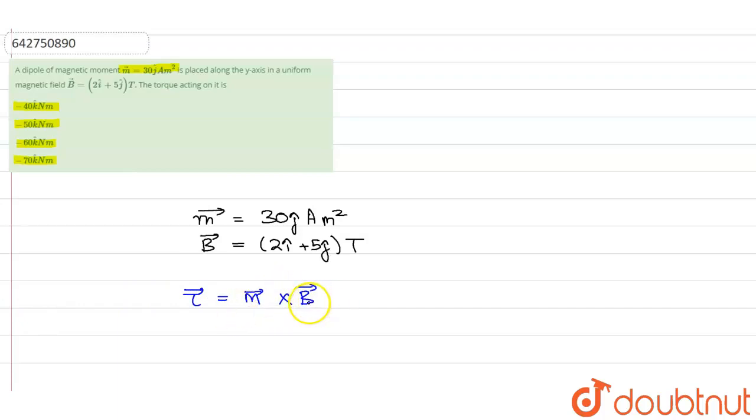And this is a cross product of the vector. So if you put these values out here, what this will become, this will become torque is equal to 30 j cap cross product of 2 i cap plus 5 j cap.